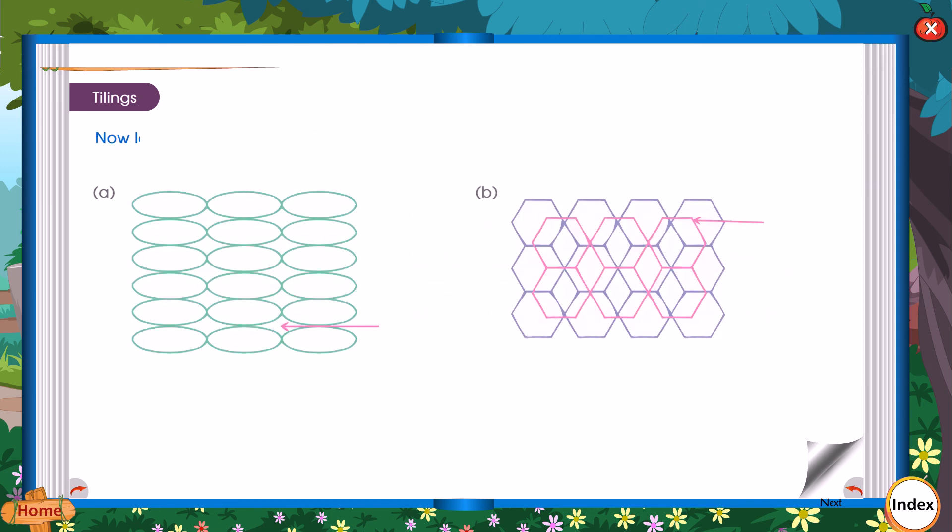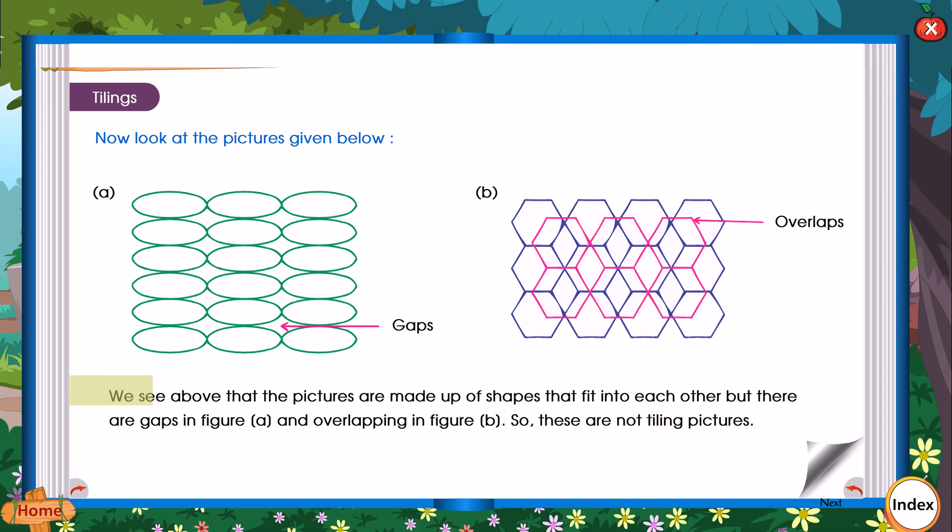Now look at the pictures given below. We see that the pictures are made up of shapes that fit into each other but there are gaps in figure A and overlapping in figure B. So these are not tiling pictures.